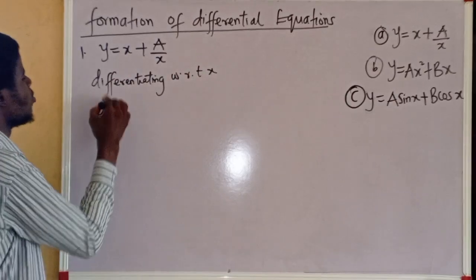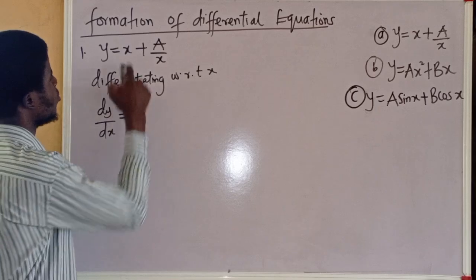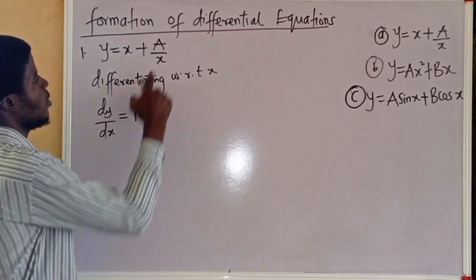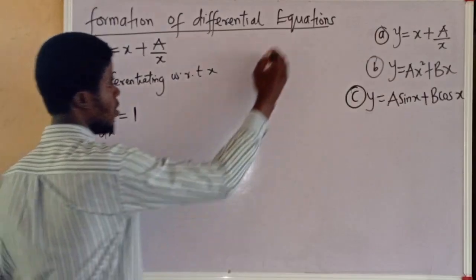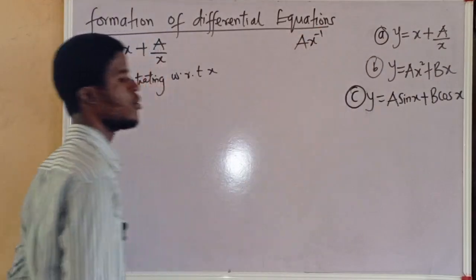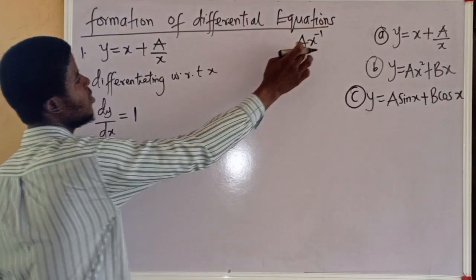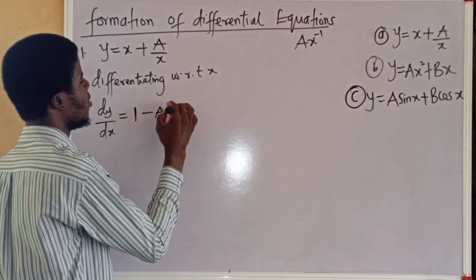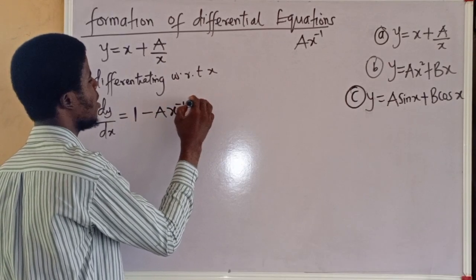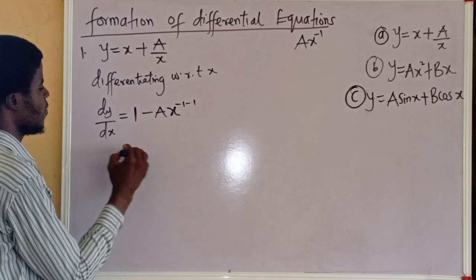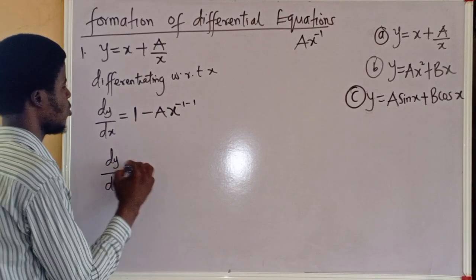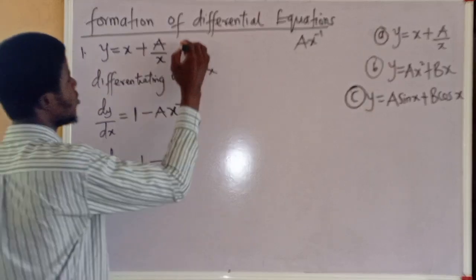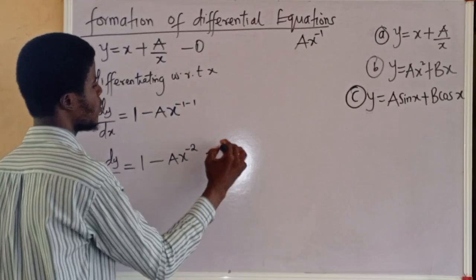So, differentiating with respect to x, dy/dx is equal to: differentiate x with respect to x to get 1. Now, a over x can be written as a·x to the power of minus 1. So, if I differentiate this, we obtain minus a·x to the power of minus 1 minus 1, which gives us dy/dx equal to 1 minus a·x to the power of minus 2. Let's call this equation 1 and let's call this equation 2.